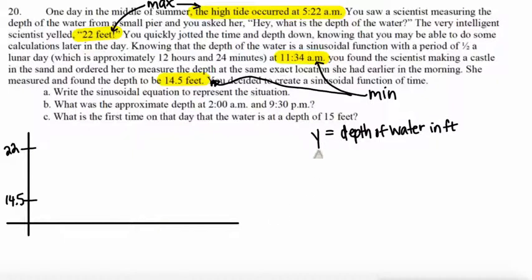Y is going to stand for the depth of the water in feet. And then along the x-axis we've got our time. We're going to say the number of hours past midnight on any given day, whichever day this is. That one day in the middle of summer.